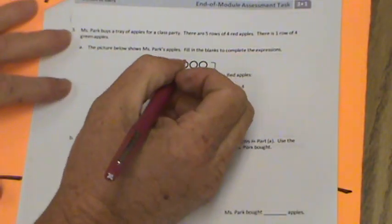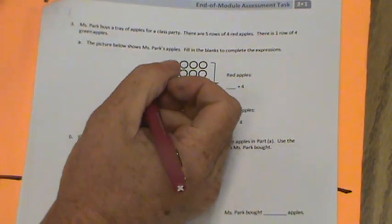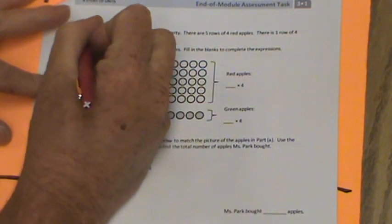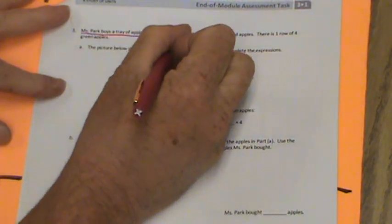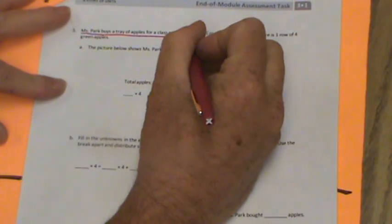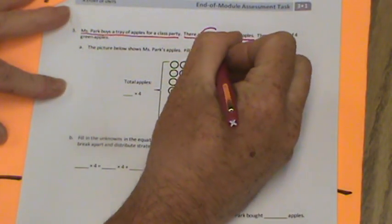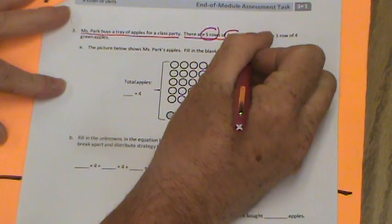So number three, we're going to annotate first and then you're going to finish the test today before we go to PE. You're going to turn it in. Ms. Park buys a tray of apples for a class party. There are five rows of four red apples.